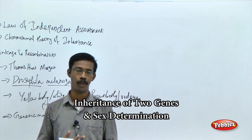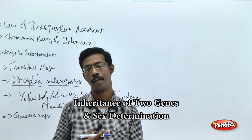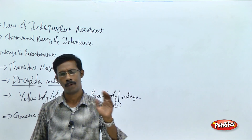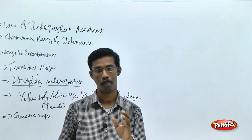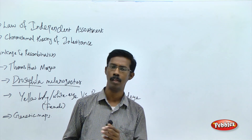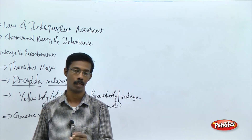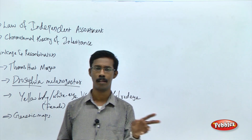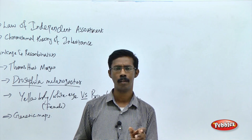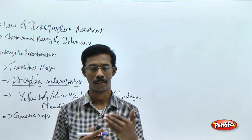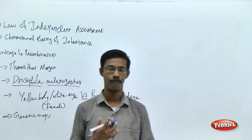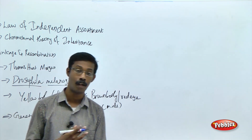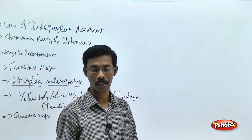In the last few classes we have seen something about the principles of inheritance and the Mendelian laws. First we have seen something about the monohybrid cross experiments and the results from the monohybrid cross in the Pisum sativum plant. There are 7 characters he has chosen, and he has crossed 7 different characteristic plants and got consistent results whenever he crossed the contrasting characters.